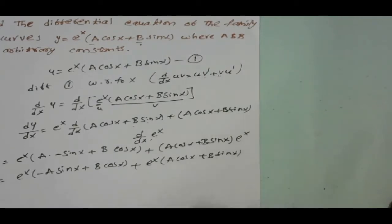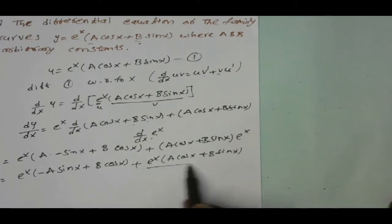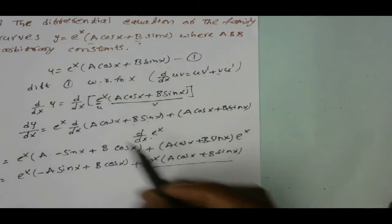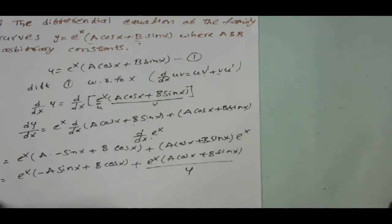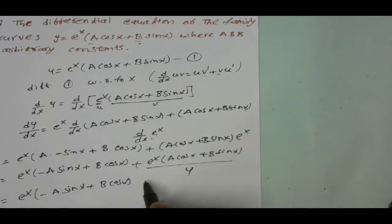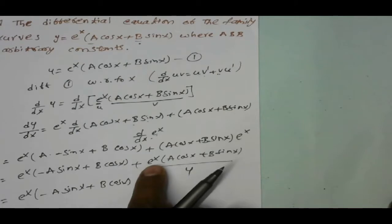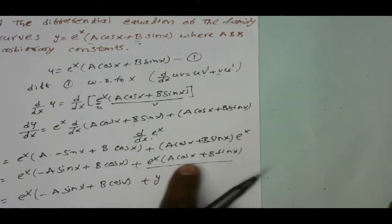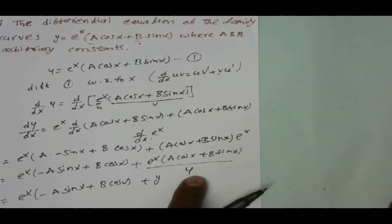From equation 1, this is nothing but y. So y₁ equals e power x into minus a sin x plus b cos x, plus y. In place of e power x of a cos x plus b sin x we can write y.